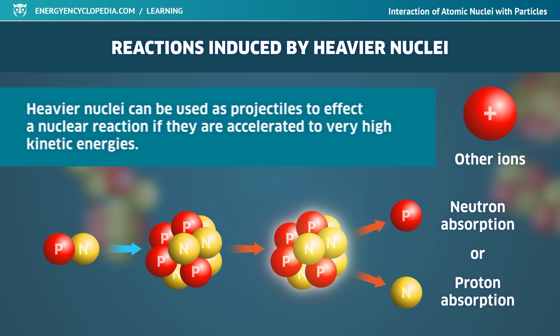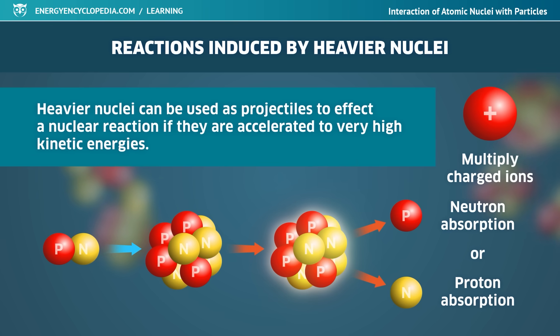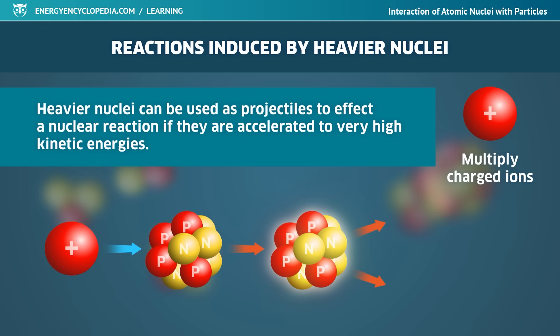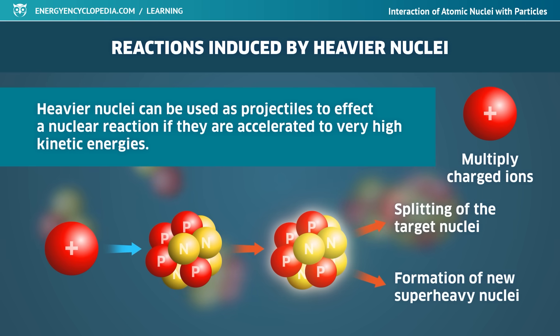Even heavier nuclei, also referred to as multiply charged ions, can only be used as projectiles to affect a nuclear reaction if they are accelerated to very high kinetic energies. The range of reactions in this case is quite wide, not excluding the splitting of the target nuclei into two lighter nuclei or, on the contrary, the formation of new super-heavy nuclei when bombarding heavy nuclei.